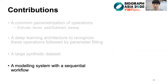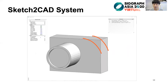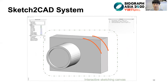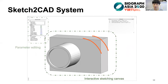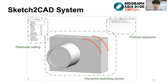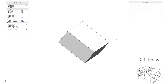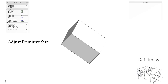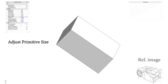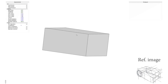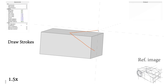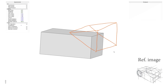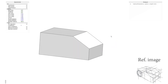Now let's see the modeling system with a sequential workflow. Our interface consists of three main parts: the interactive sketching canvas, the parameter editing panel, and the protocol sequence illustration panel. In the live demo, a reference ideation sketch by the designer is shown in the bottom right corner. The user first adjusts the primitive box size, then selects the view to draw strokes. The shape is updated by the operator recovered via network prediction and parameter optimization.